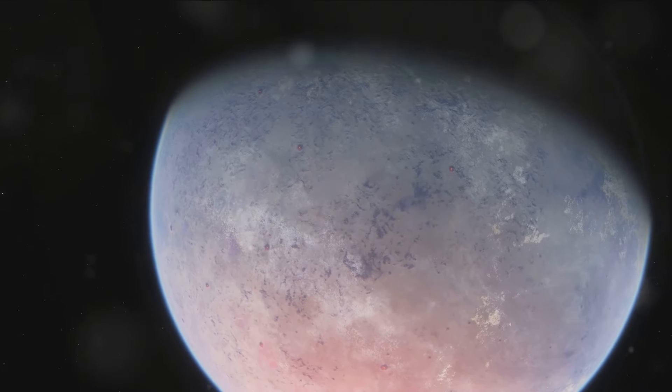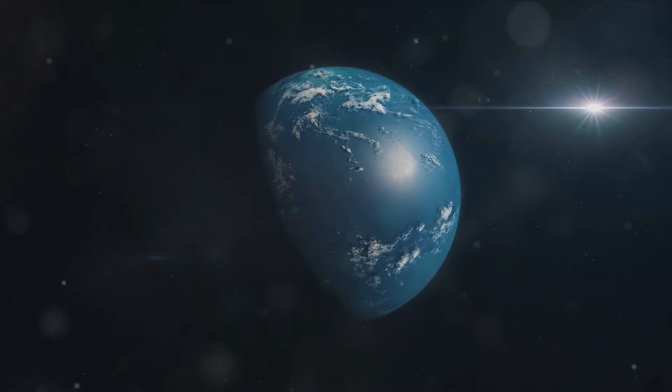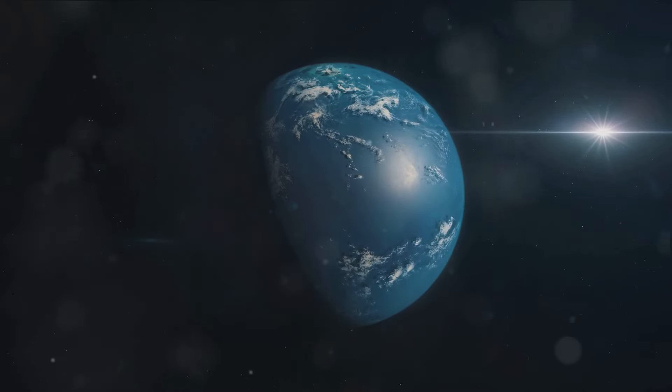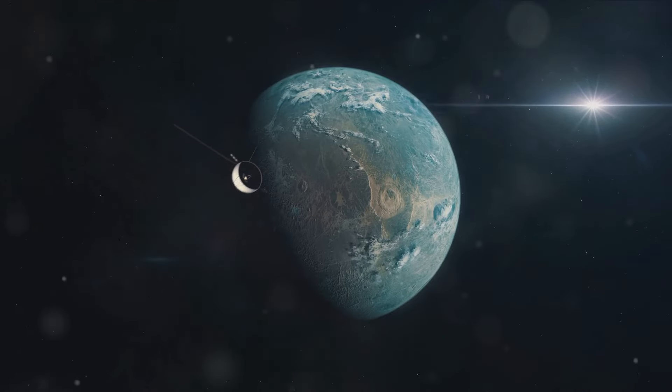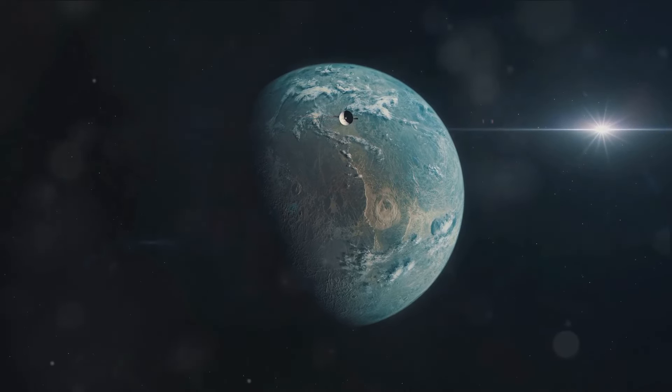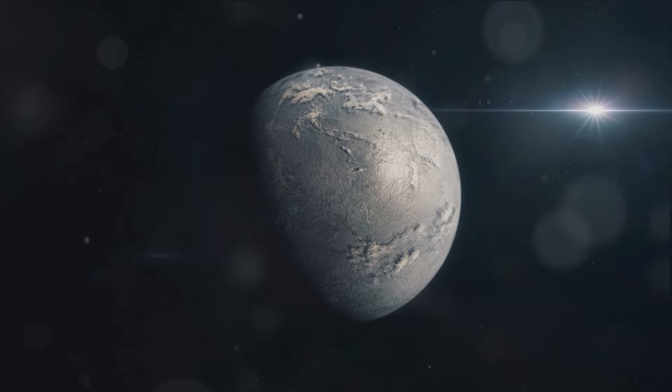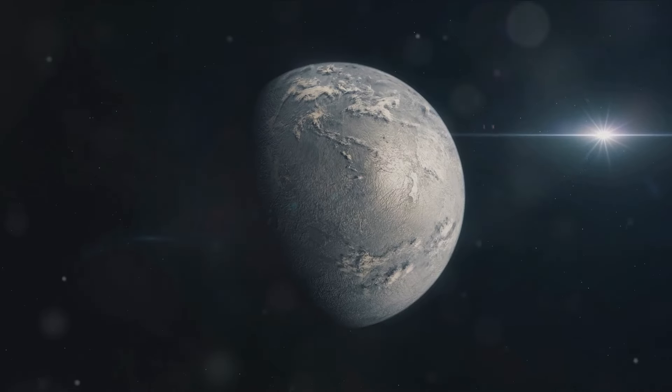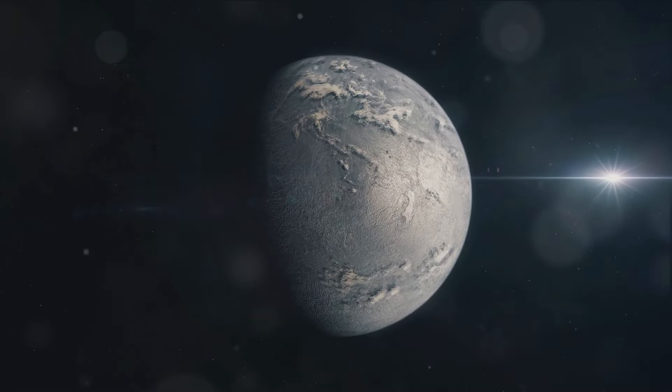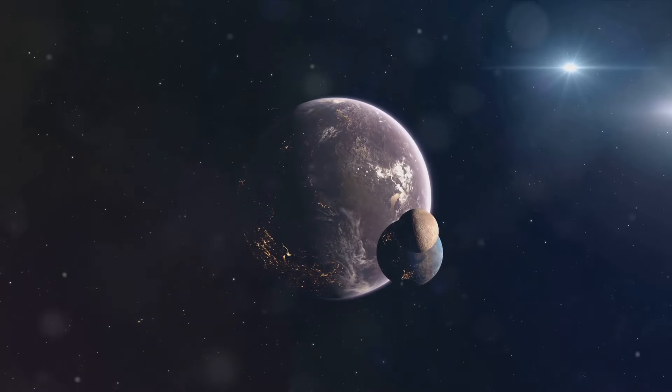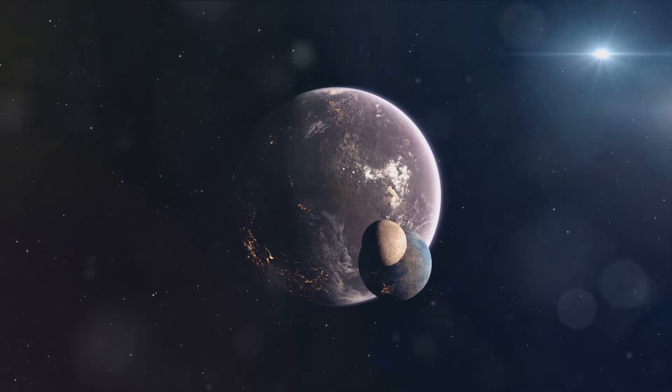Proxima Centauri b orbits within its star's habitable zone, a region with climatic conditions potentially supportive of liquid water. This crucial detail sparks an inferno of curiosity, as liquid water is one of the essential ingredients for life as we understand it. Could life exist in such an environment? Could it be a habitat for species yet undiscovered, or perhaps a refuge for humanity itself? This tantalizing prospect of an Earth-like exoplanet in our cosmic vicinity keeps our fascination ignited.